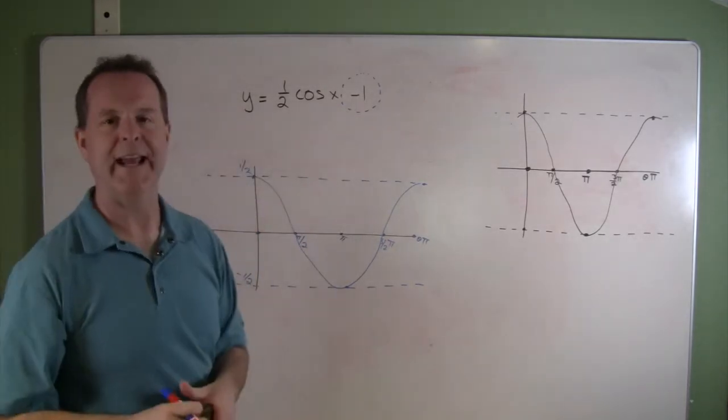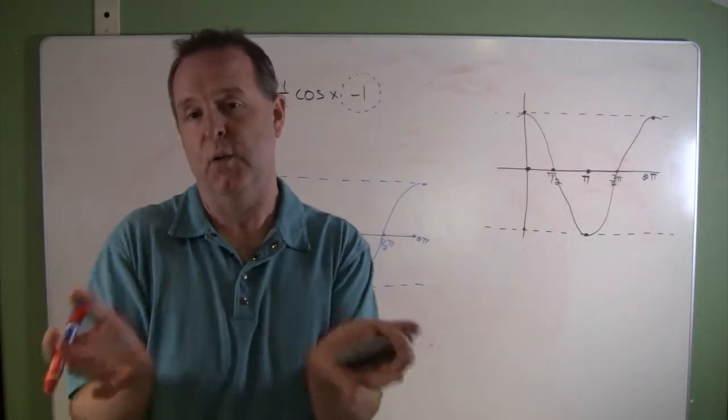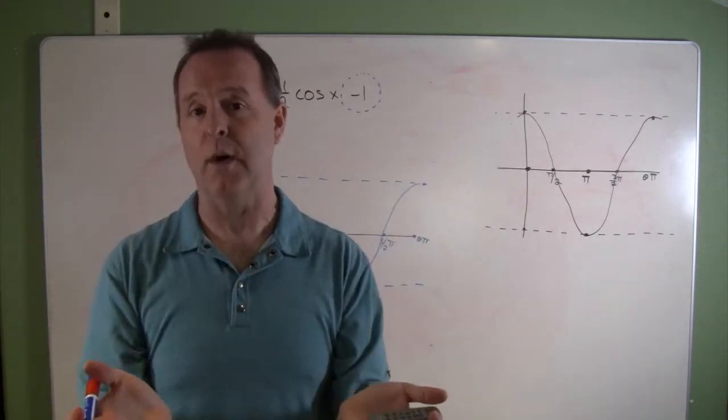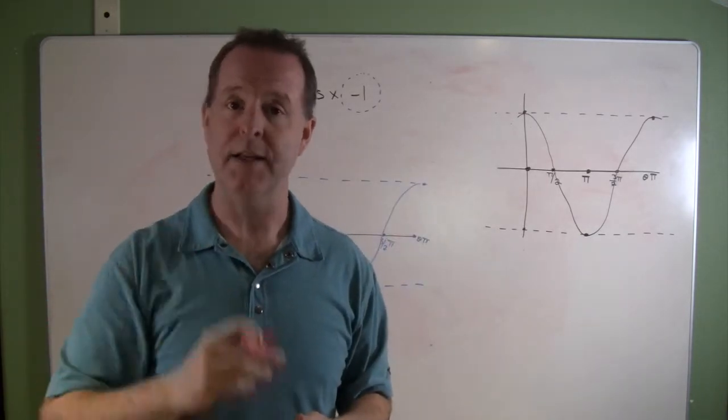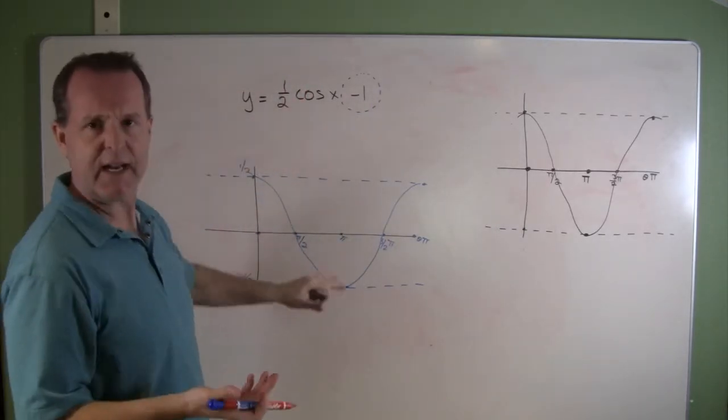Now what does this negative one do? Well, that negative one gives us a vertical shift. So we either take the entire graph and shift it up one or negative one, depending on what the value is. And in this particular case, it's a value of negative one. So I take my entire graph, and I just shift it down one.